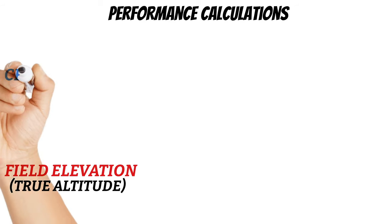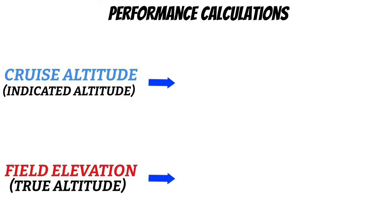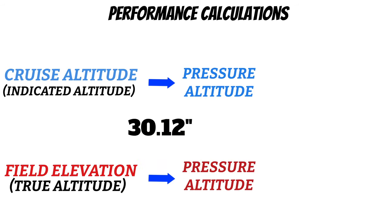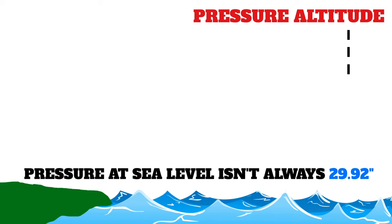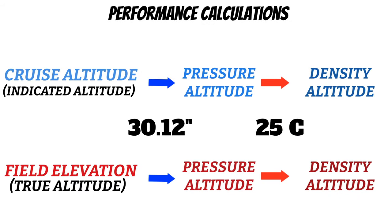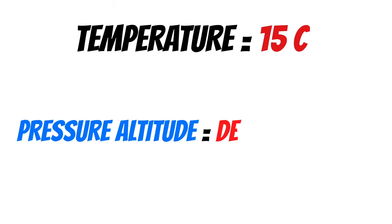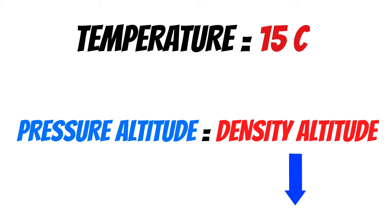Before we move on, let's take a quick look at the relationship between all these things. When we're talking about performance, we need to start with the field elevation shown in true altitude, or a cruise altitude shown as indicated altitude. From these, we can convert to pressure altitude by accounting for non-standard air pressure. Pressure altitude is our distance above 29.92 inches — not necessarily the actual pressure that day. From there, we get our density altitude by accounting for non-standard temperature. If temperature is exactly 15 degrees, pressure altitude and density altitude are the same. Below 15 degrees, density altitude will be below pressure altitude; above 15 degrees, density altitude will be higher.